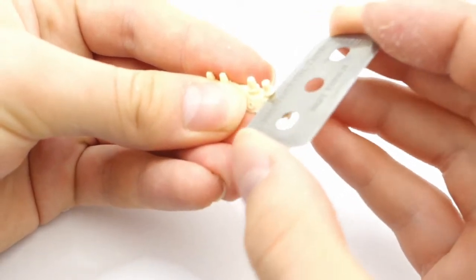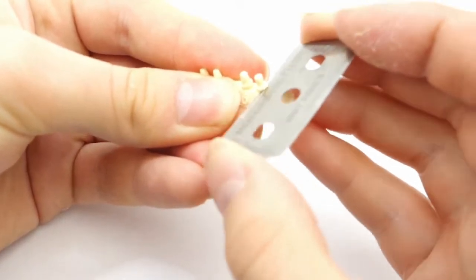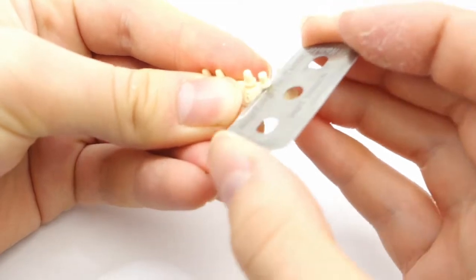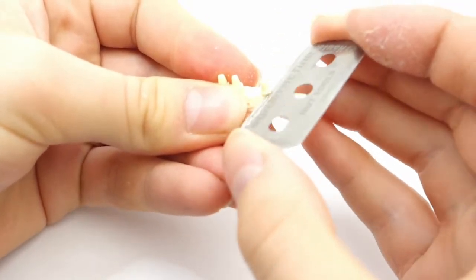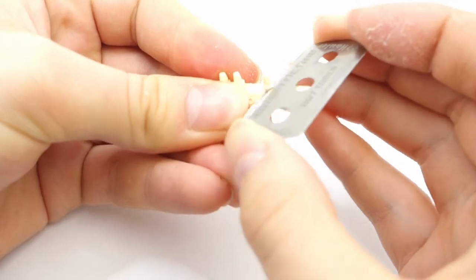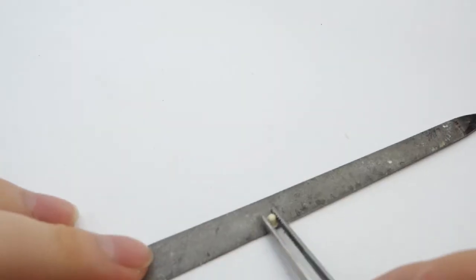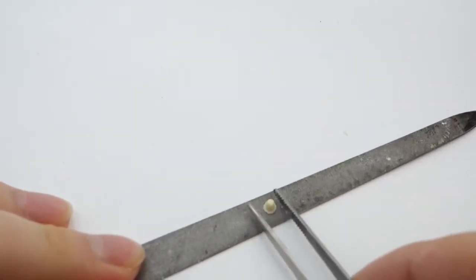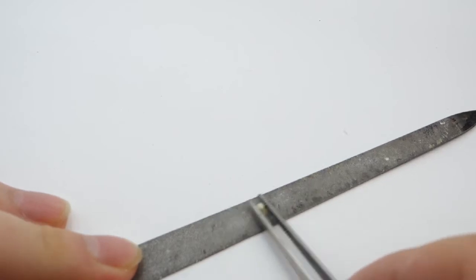The periscopes are taken from the same set I've made resin copy of earlier to source some periscopes for my SU-85. After some intense sanding they can be added to the roof of the turret.